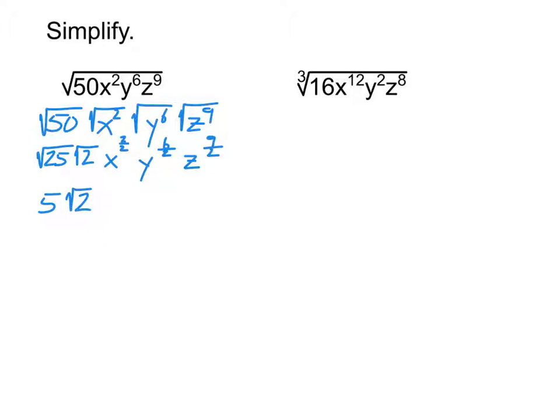I now tackle the x's. x to the 2 over 2 is x to the power of 1, but of course I don't need to write to the power of 1. That's just x. y to the 6 over 2, 6 over 2 reduces down to be 3. So that becomes y to the power of 3.